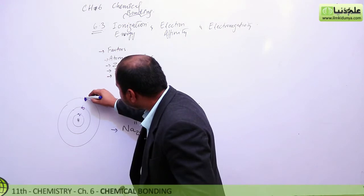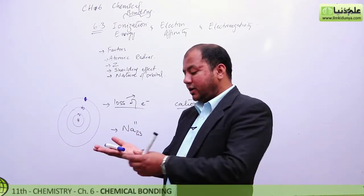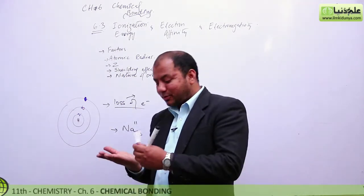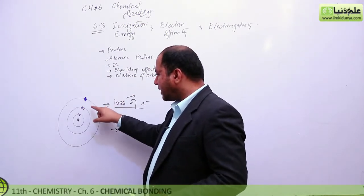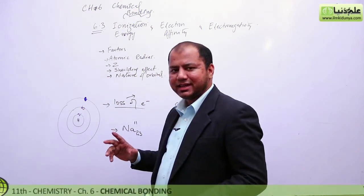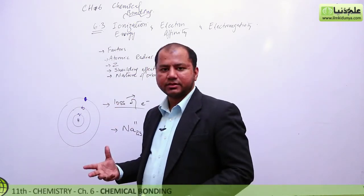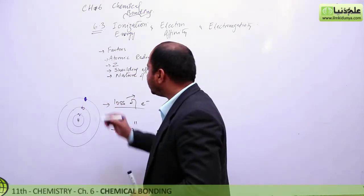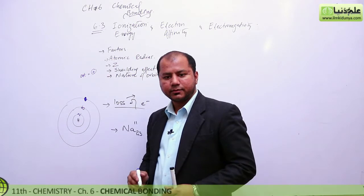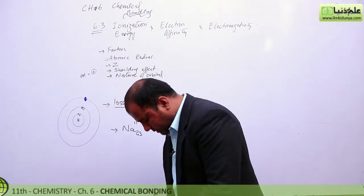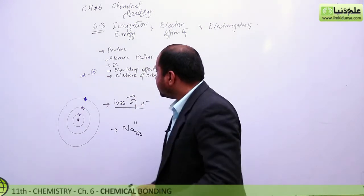This outermost electron is our target to remove. Think of it like displacing a marker — it takes energy to move it. So to remove an electron, energy is required. This means the enthalpy is positive — you are putting energy in to remove the electron.